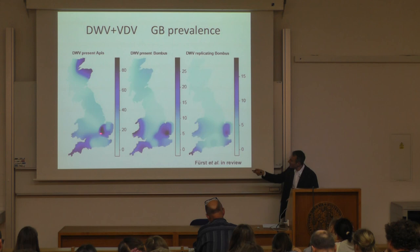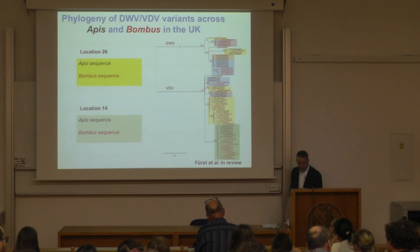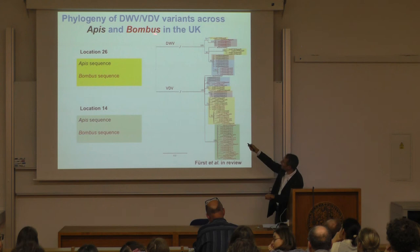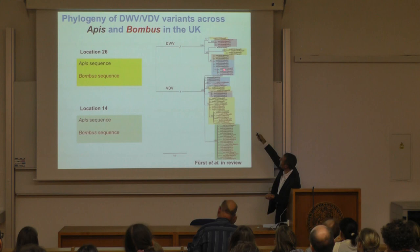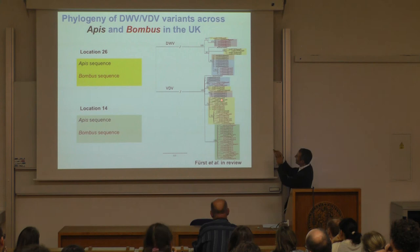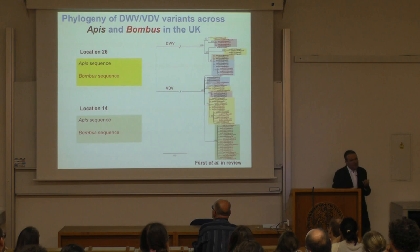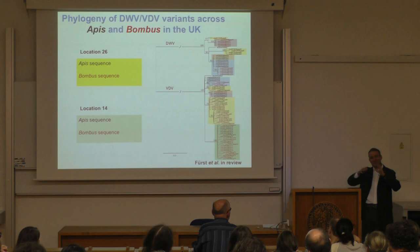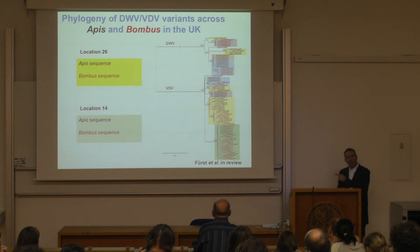We have the advantage that DWV is an RNA virus with a high mutation rate, so there are lots of genetic variants, allowing us to partition diversity within and between locations, and within and between species. This raises concerns, as with bovine tuberculosis in the UK — shared between cattle and badgers — leading to major political and social tensions about whether to cull badgers. Similarly, data on shared bee viruses might lead beekeepers to say 'bumblebees are killing our honeybees' or conservationists to say 'honeybees are killing our bumblebees.'